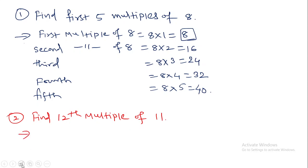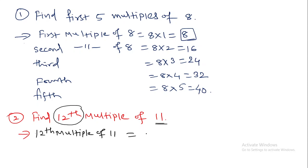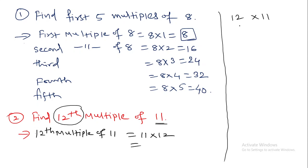So, twelfth multiple of eleven means multiply twelve by eleven. Now I'll tell you the trick of multiplying by eleven. Suppose twelve is given and we multiply it by eleven: write down the first digit as it is — two; add these two digits: two plus one is three; then write the last digit as it is — one. So we get one hundred and thirty-two. This is our twelfth multiple of eleven.